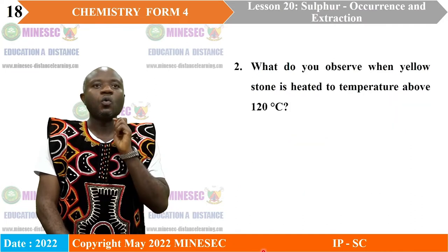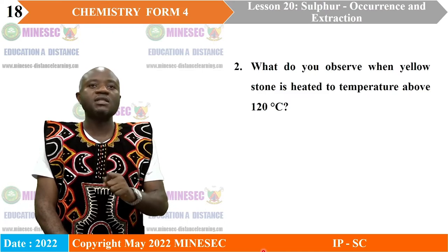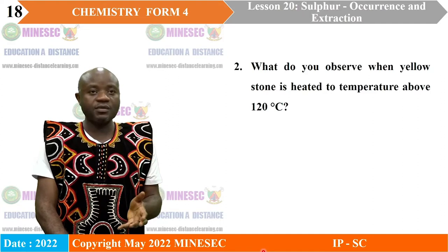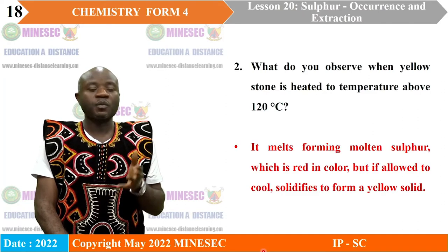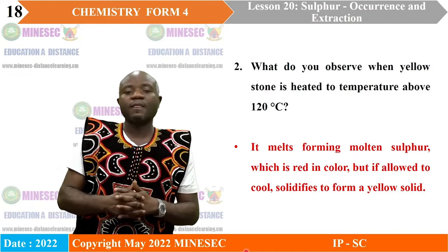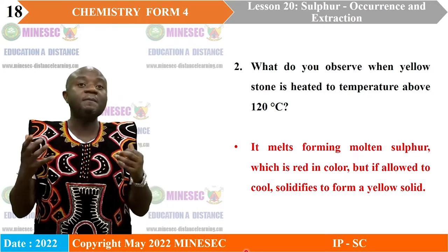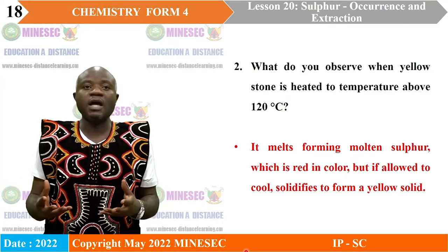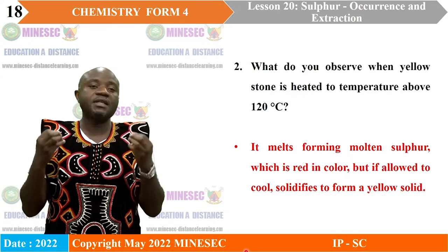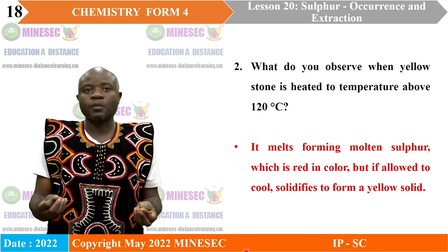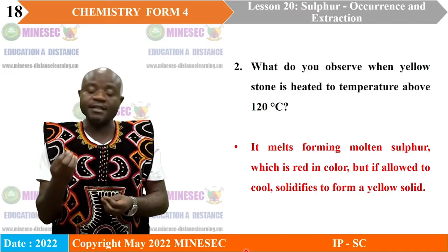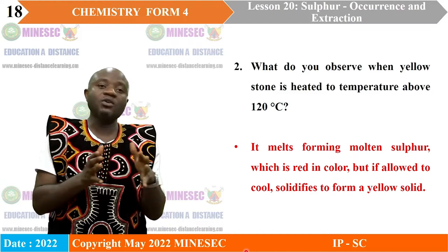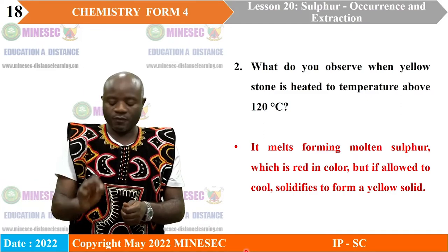Activity two: What do you observe when yellowstone is heated to a temperature above 120 degrees Celsius? When yellowstone is heated, it melts, forming molten or liquid sulfur. This liquid sulfur appears red in color. But if this red liquid sulfur at high temperature is allowed to cool, it solidifies and the yellow solid we started with is formed again.